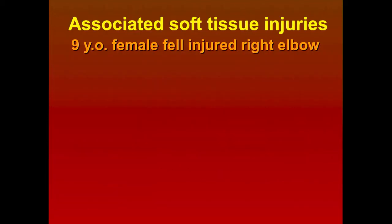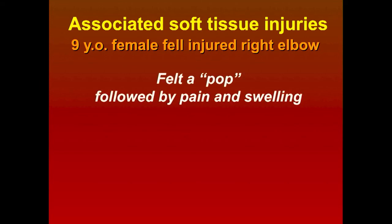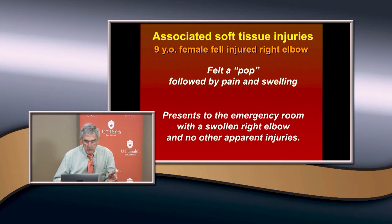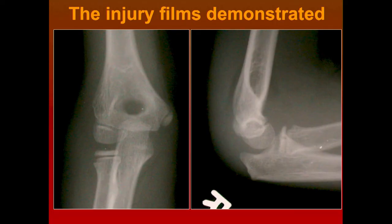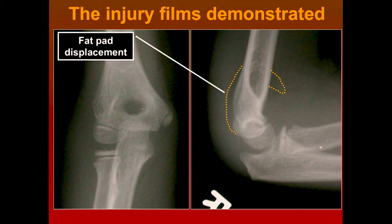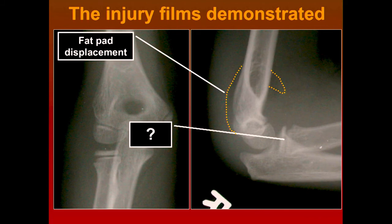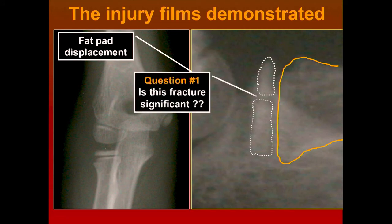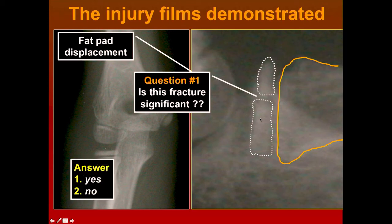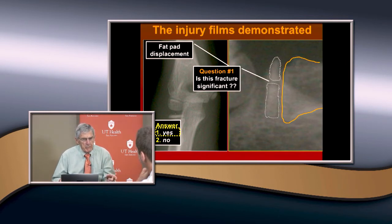Regarding associated soft tissue injuries: a patient presented with a felt pop, swelling, and a swollen right elbow. X-rays showed positive fat pads indicating intra-articular injury, and a fracture of the radial head — slightly posteriorly subluxed. This is a radial head fracture, which is different from a radial neck fracture and tells you something important about associated soft tissue.